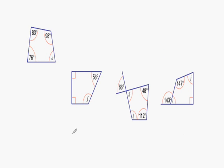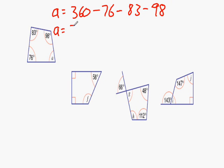We can figure out A by taking 76, 83, and 98 away from 360. This leaves us with a total of 257.